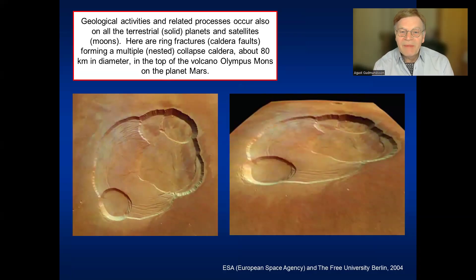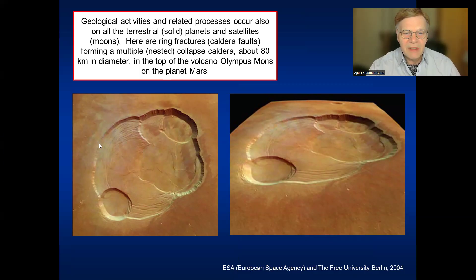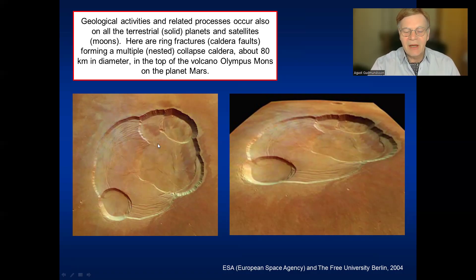We should also remember that geological processes and activities are not confined to the Earth. They occur on all terrestrial or solid planets and their satellites. Here we see an extremely detailed view of a huge collapse called the Ring Fault in the top of a gigantic volcano, Olympus Mons, on the planet Mars. This is the largest volcano known in the solar system. The caldera is 80 kilometers across — a so-called nested caldera, meaning several calderas within the big caldera. The volcano as a whole is 600 kilometers in diameter, similar in size to the whole of Iceland.